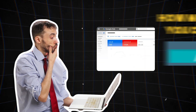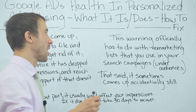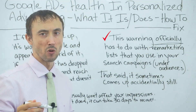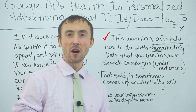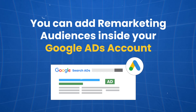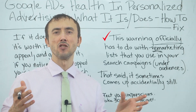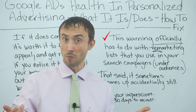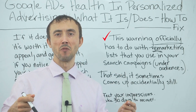If you have this showing up inside your account right now, the reason it shows up — the official reason anyway — is usually related to remarketing audiences. If you weren't aware, you can add remarketing audiences inside your Google Ads account for search ads. You have to add them to the audiences of your search campaigns, and the premise is that you can bid more or less based on whether somebody has been to your website before.